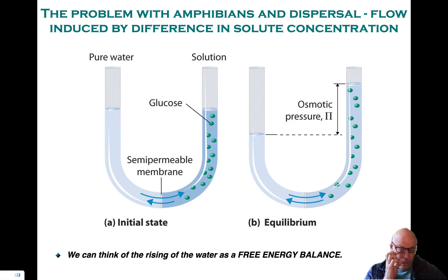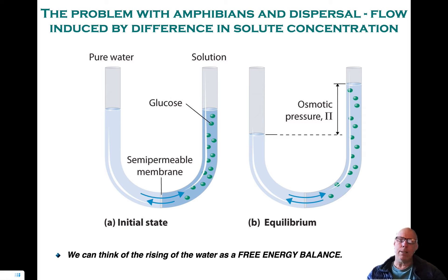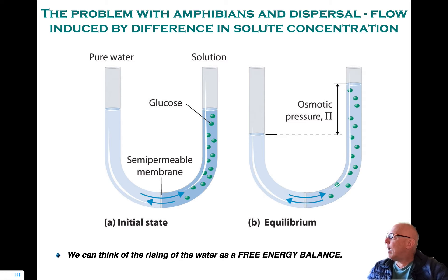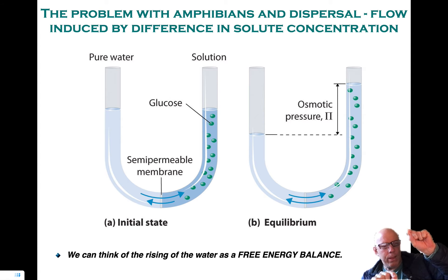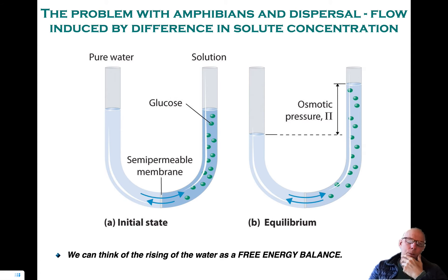Free energy is U minus TS — U being internal energy (or enthalpy) and TS being temperature times entropy. That competition we're going to plot as F of H — F meaning free energy — as a function of H, which is how high the water went on the right-hand side. That's going to be our analysis of this osmotic pressure effect.